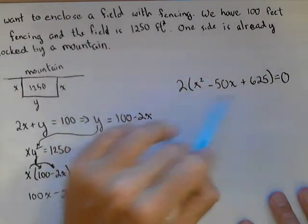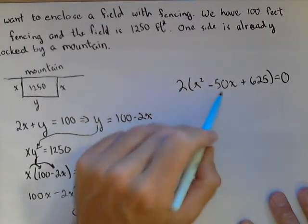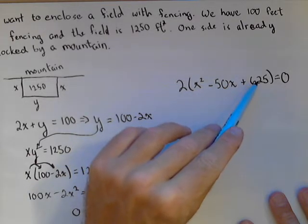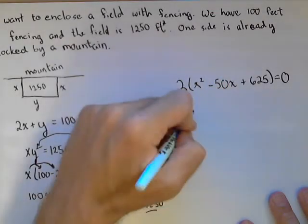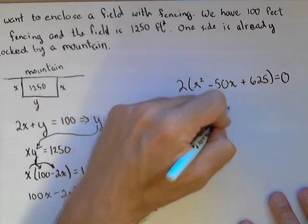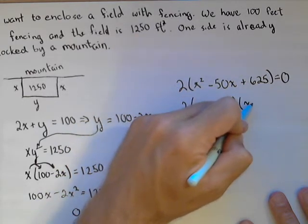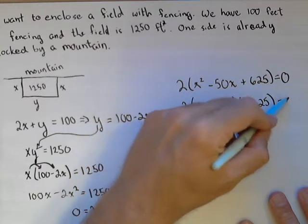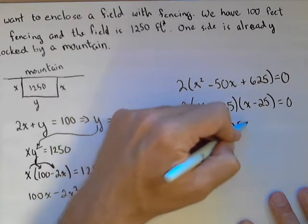Now, I don't need to worry about the 2 as far as finding the zeros. All I've got to do is look at the part in the parentheses. Now, what I need are 2 numbers that, when multiplied together, give me 625, and when added together, give me 50. So, this one works out pretty nice because 25 and 25 are such numbers. Because, 25 times 25 is 625, 25 plus 25 gives us 50. So, we get that the dimension of side x has to be 25 feet.